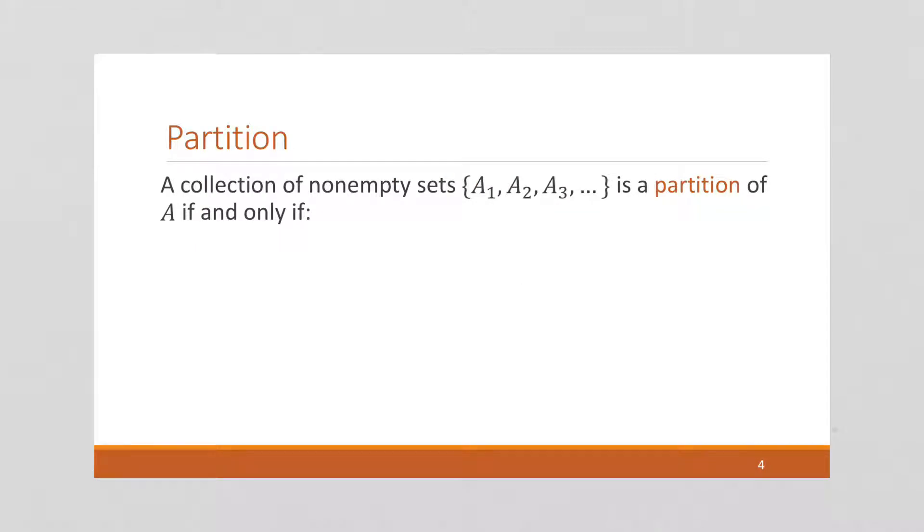And then finally we can define partition. A partition is a collection of non-empty sets. It is a partition of A if and only if A is the union of A of I. So if all the index sets A of I are union together and that makes A, and if A1, A2, and so on are mutually disjoint.